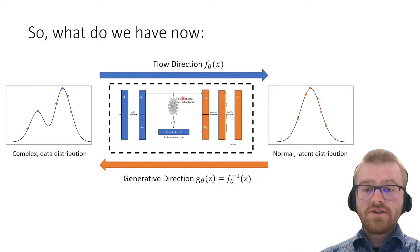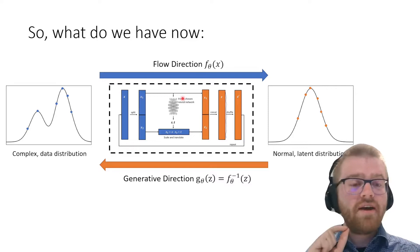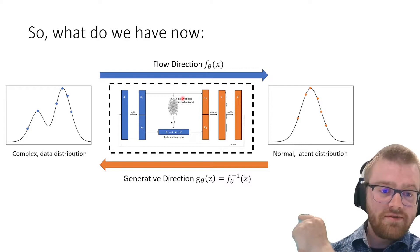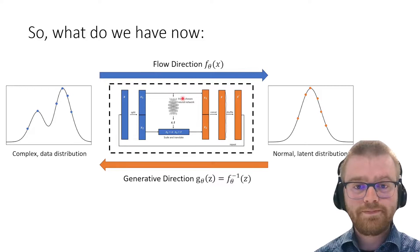What we have now is the following: on the left we've got the complex data distribution, and we can now do affine flow or more powerful flows to go to this normal latent distribution. We can also go in the generative direction because we exactly know the inverse of this mapping.